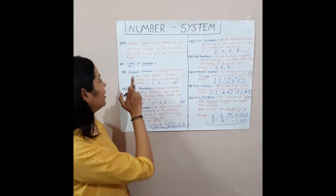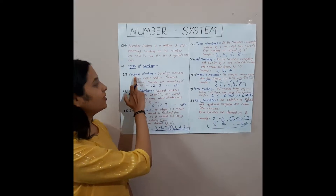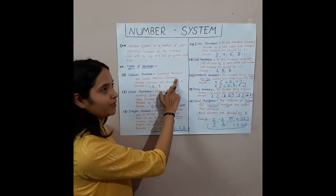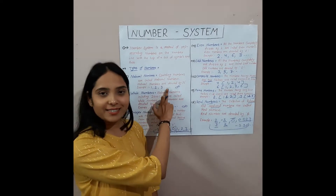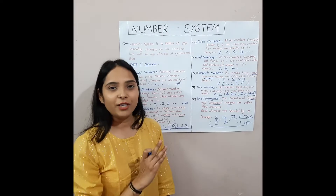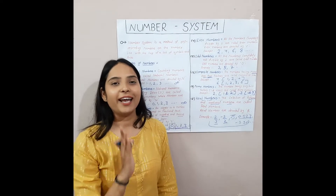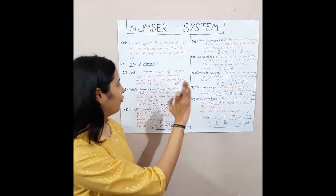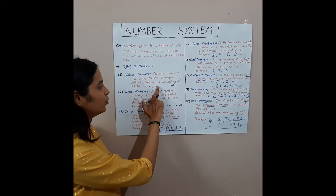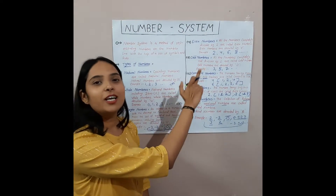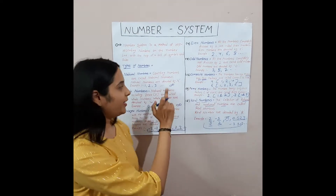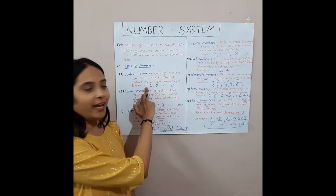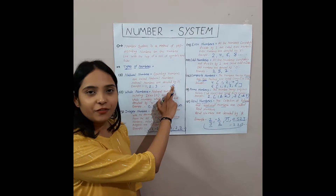First we explain the natural number. Counting numbers are called natural numbers. Natural numbers start with 1 and end at infinity. For example: 1, 2, 3, 4, 5 and so on — these numbers start with 1 and end at infinity.